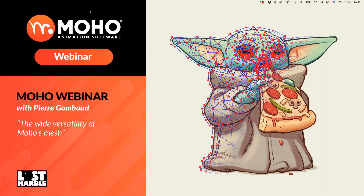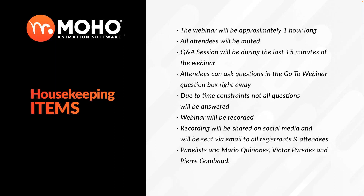Hi, everyone. Thank you so much for joining us today. Today's webinar will be about the wide versatility of Mojo's mesh, presented by Pierre Gombaud. Before we begin the webinar, there are some housekeeping items we'd like to go through. This webinar will be recorded and sent via email to all registrants and attendees, and will also be uploaded to our YouTube channel. You can ask questions in the GoToWebinar question box, and we'll be selecting your questions in the last 15 minutes.